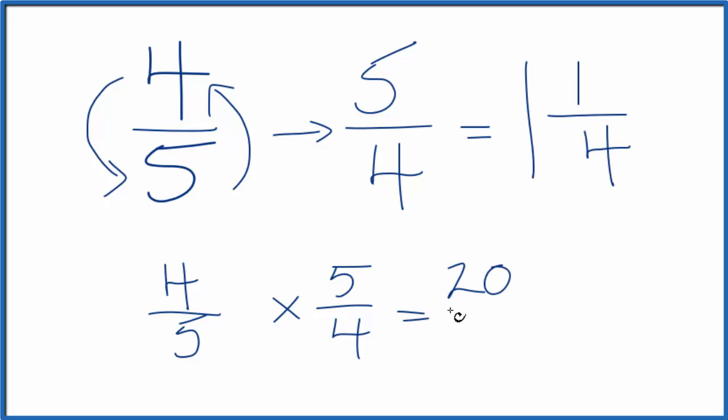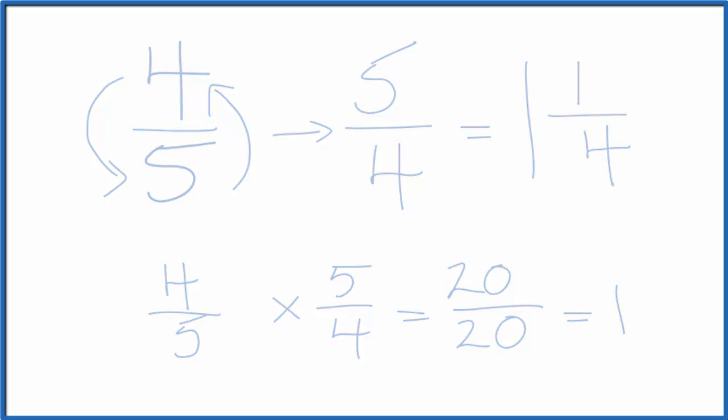Four times five is twenty, and five times four is twenty. Twenty divided by twenty is one. So we did the first part correctly. The reciprocal for four-fifths is five-fourths. This is Dr. B, and thanks for watching.